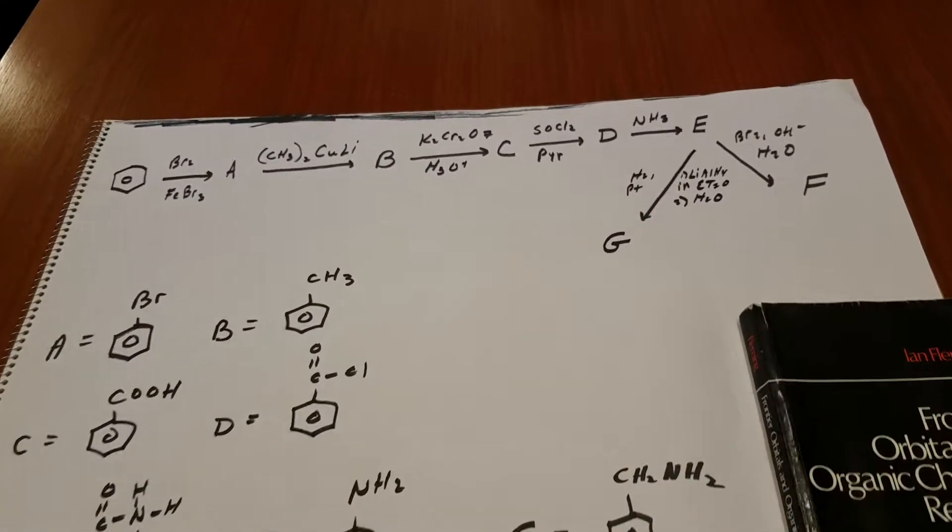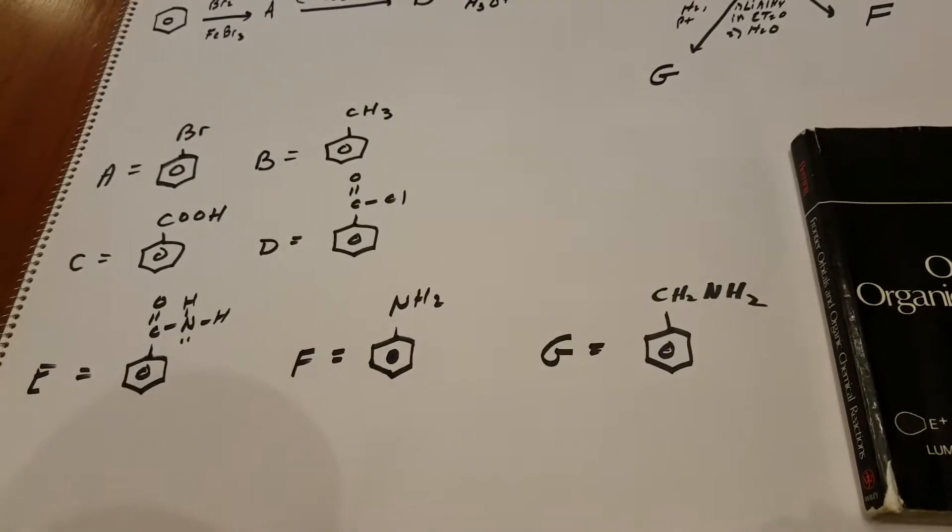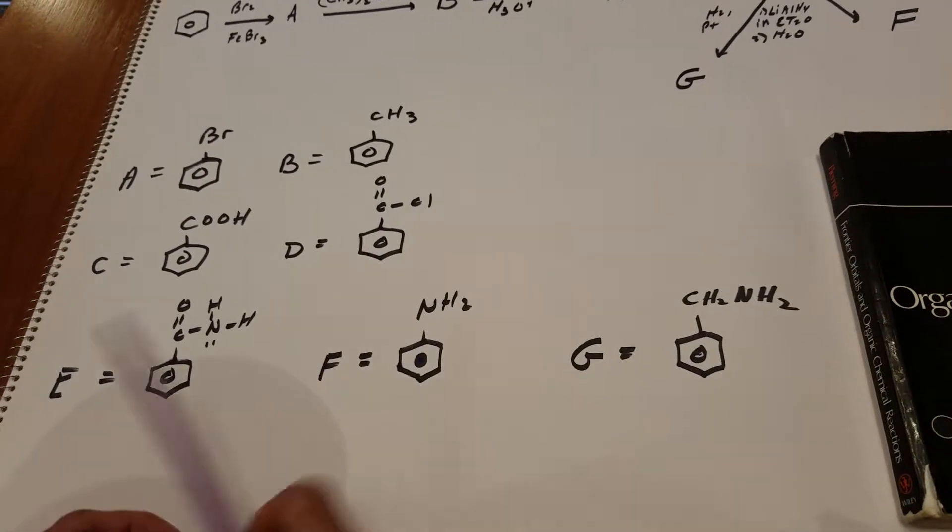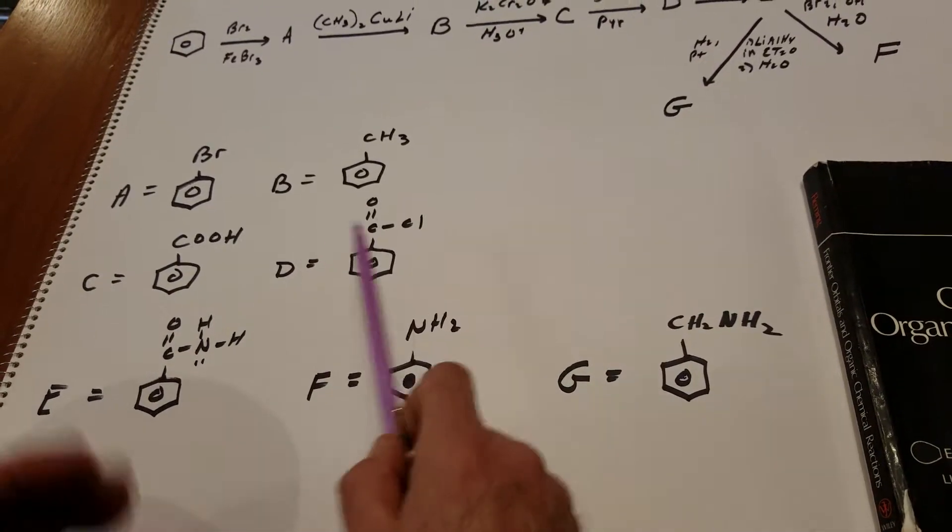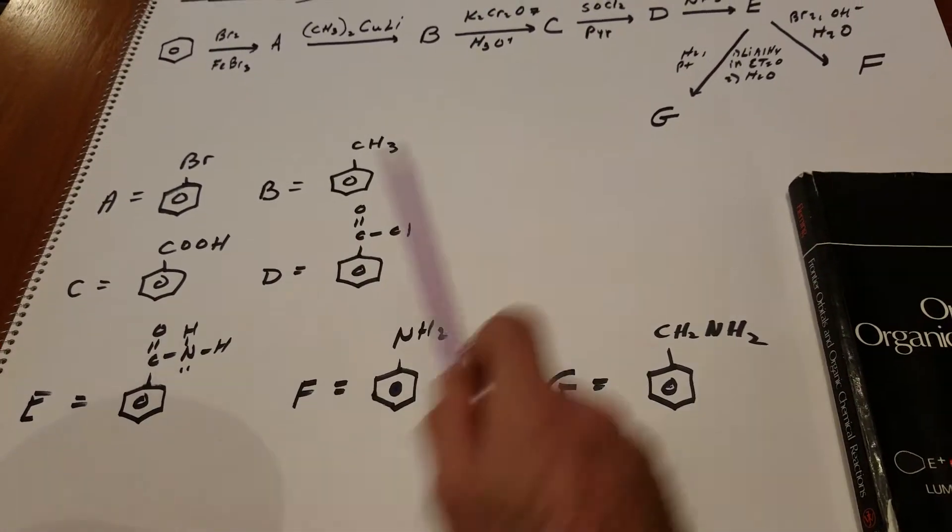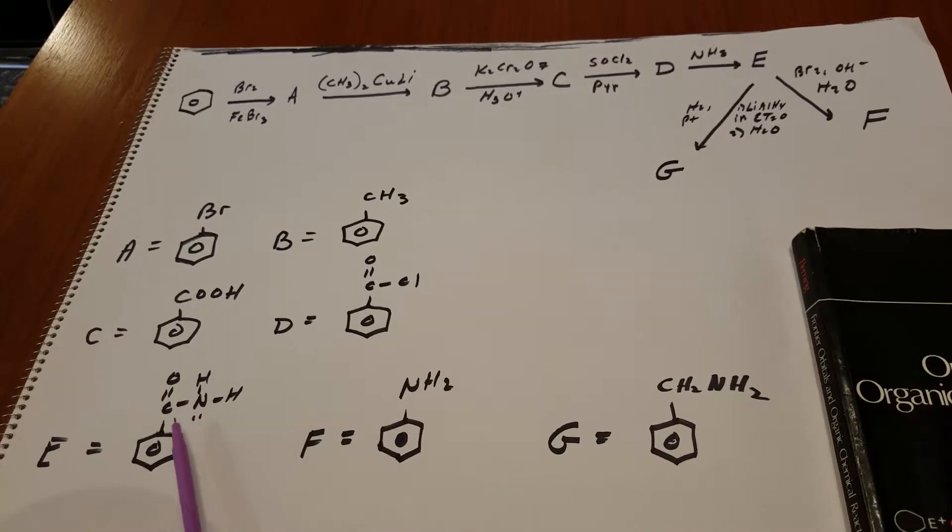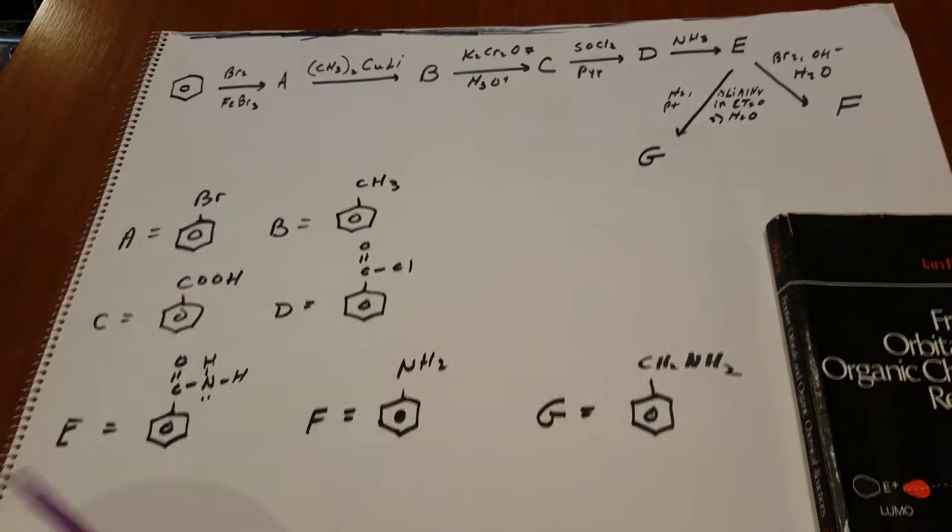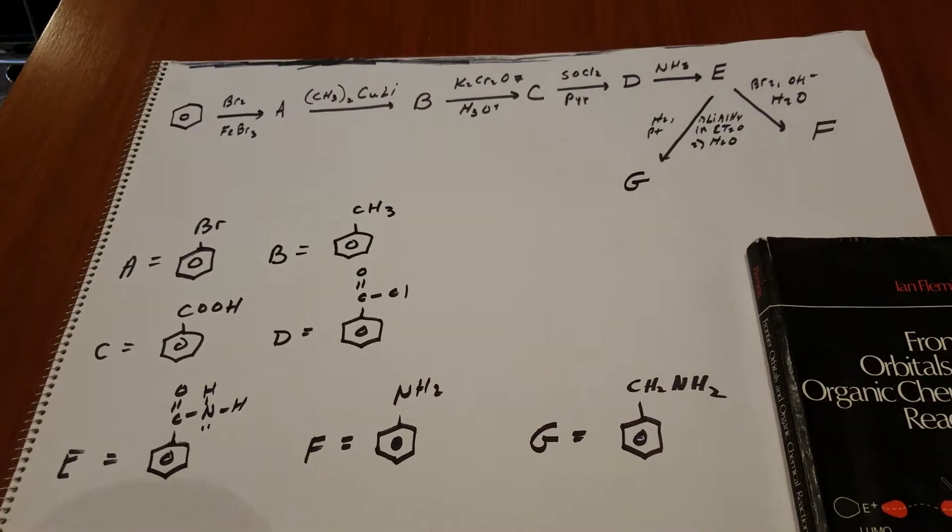C to D is still easy. All we're going to do is we're going to replace the OH with a chlorine from the SOCl2. And that gives me benzoyl chloride. Now, once the acyl halide is made, we react it with ammonia, we split off HCl, and that gives me benzamide, which is letter E. I got you through A, B, C, D with E's.